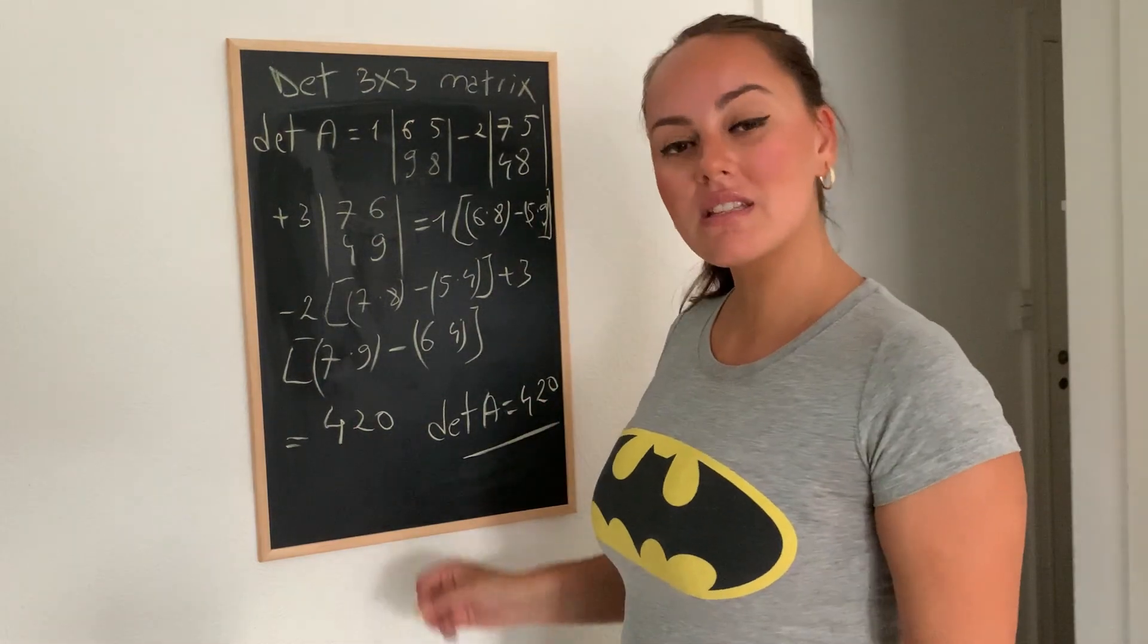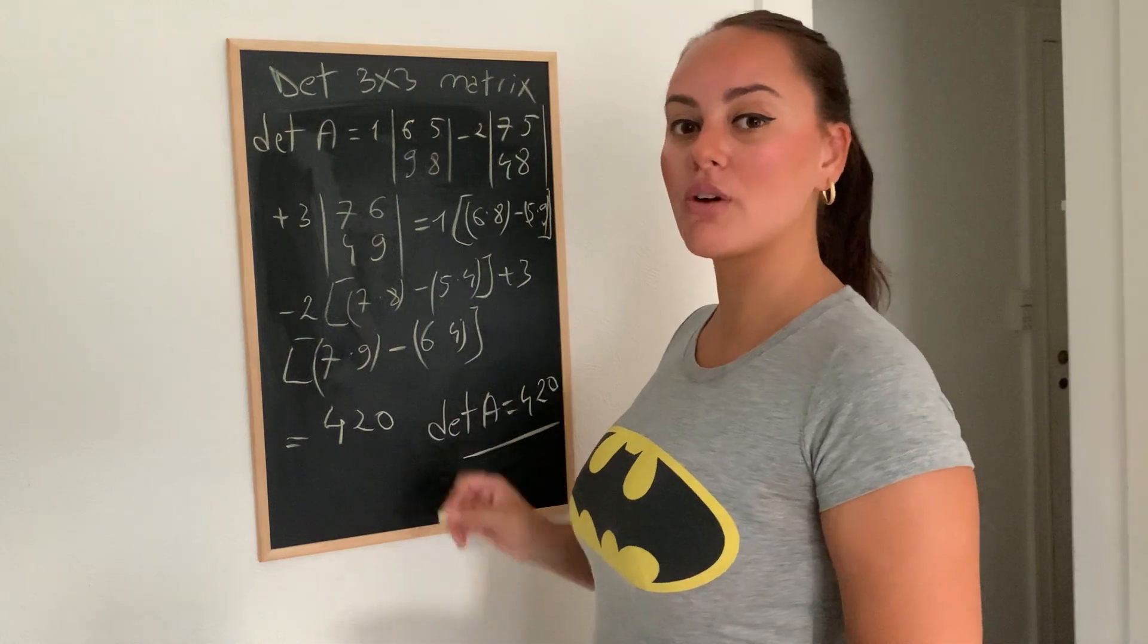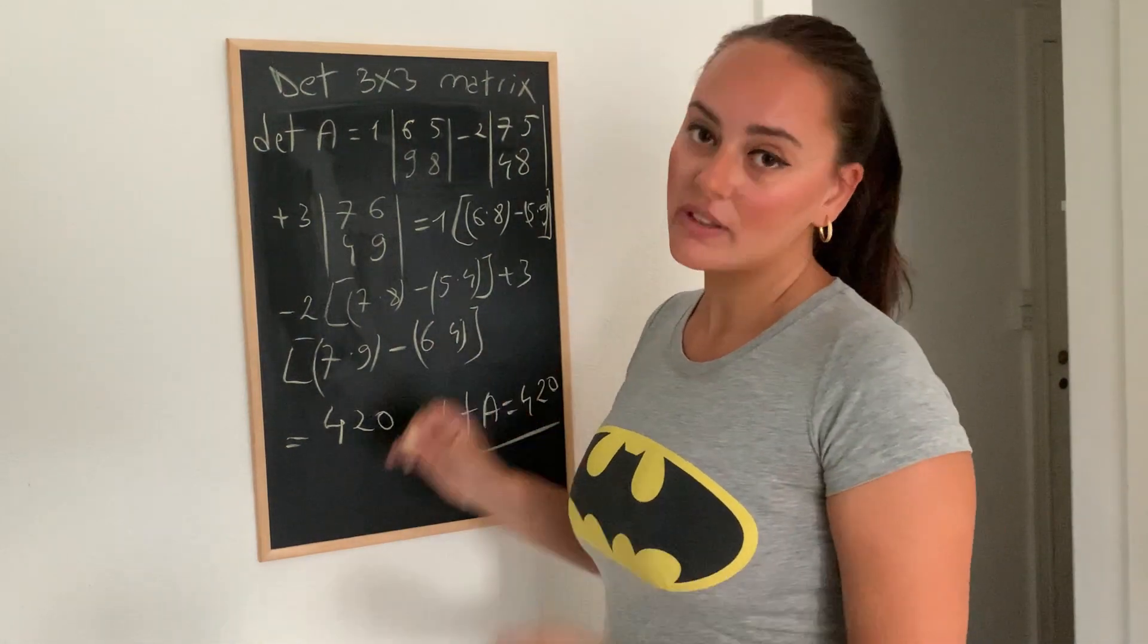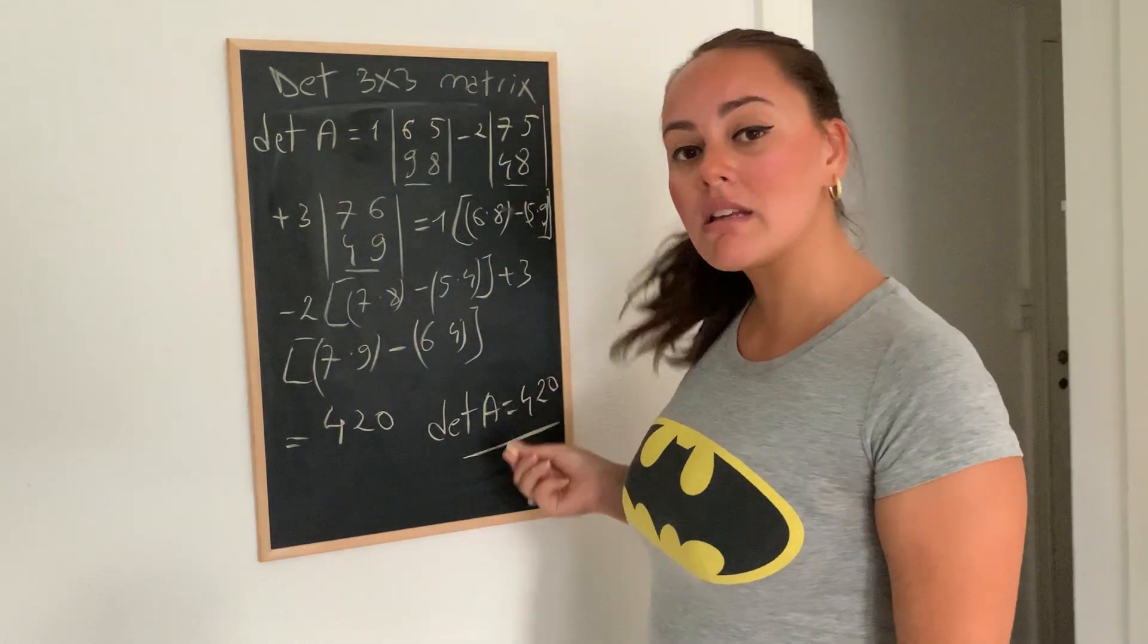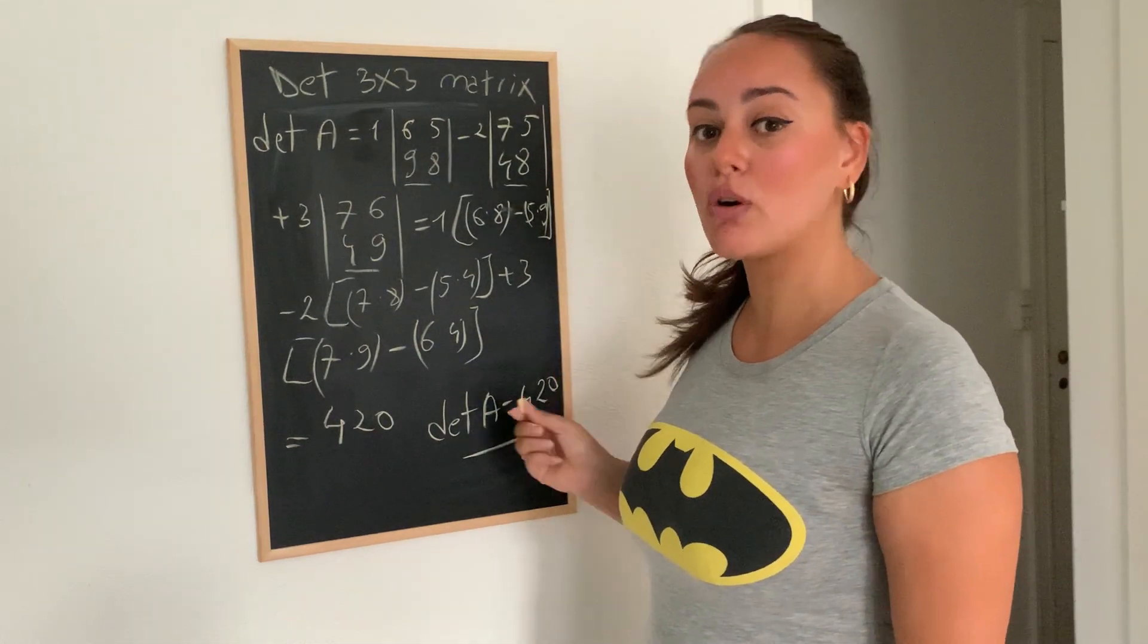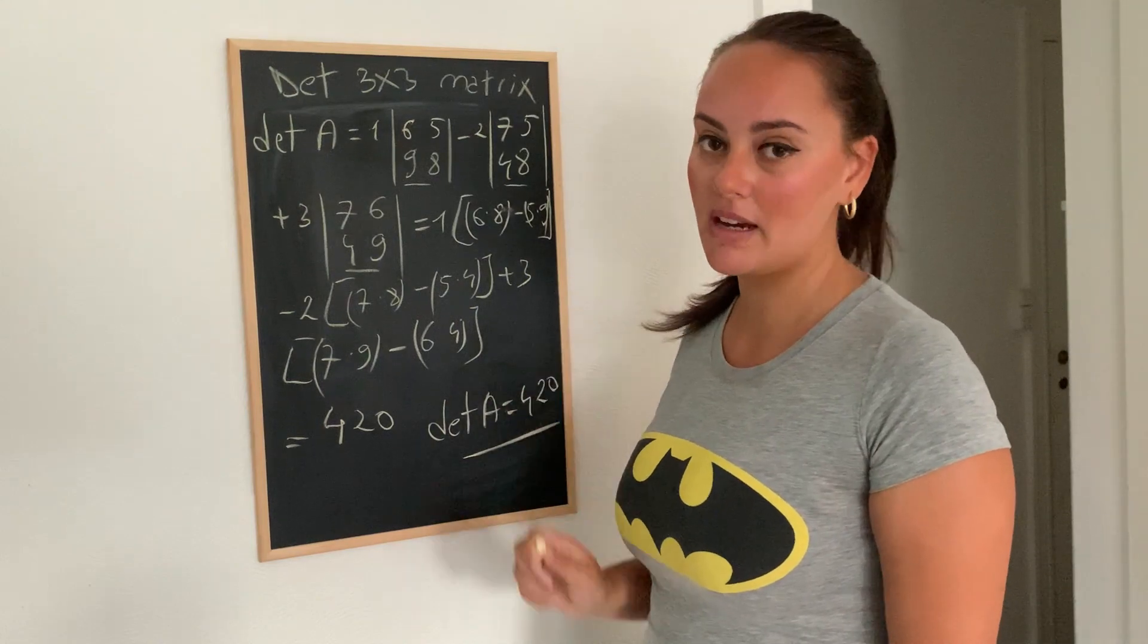There we go. And this is how you calculate the determinant of a 3x3 matrix with the help of a determinant of a 2x2 matrix. And remember, if your determinant of a matrix is equal to 0, it means that we do not have an inverse.